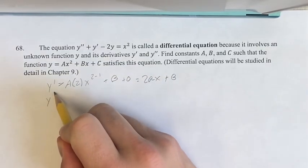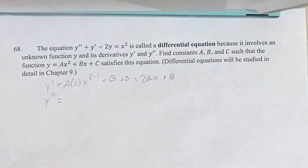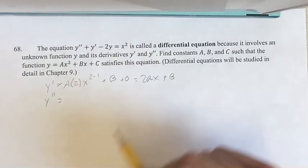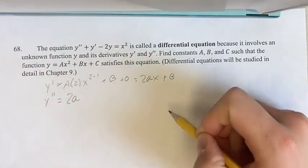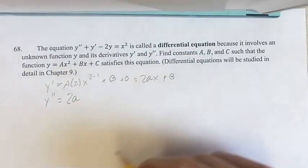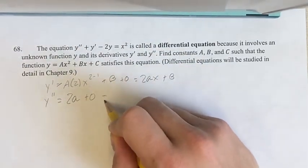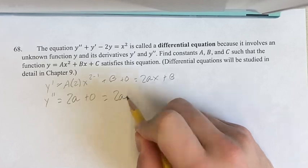Next, we know that y double prime is just the derivative of the derivative. And again, if we have an x term, we can just say that its coefficient is the derivative. And then the derivative of a constant is 0, so this is 2a plus 0, which is just 2a.